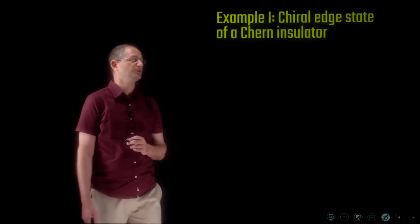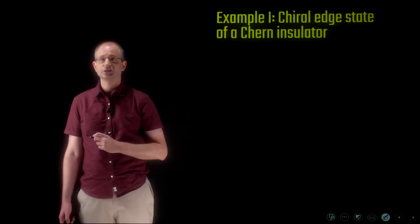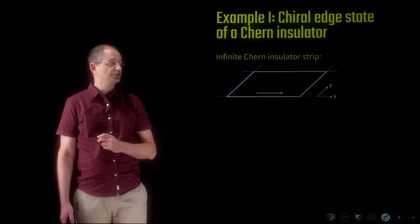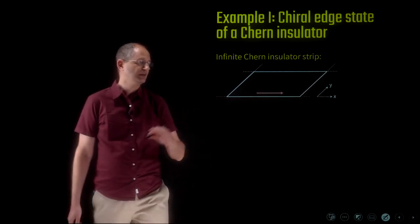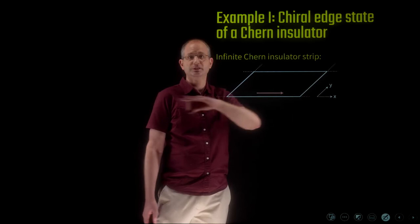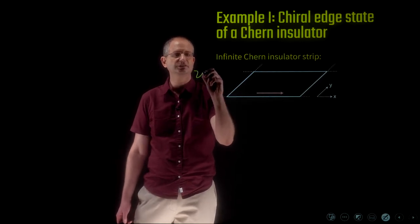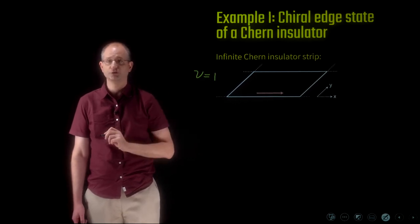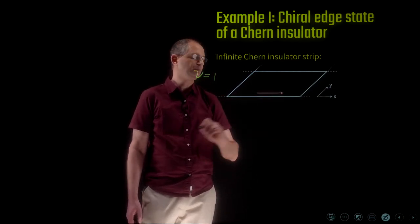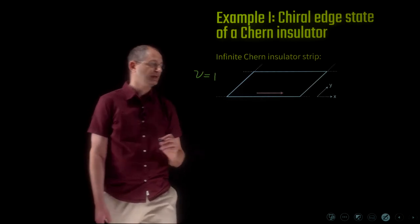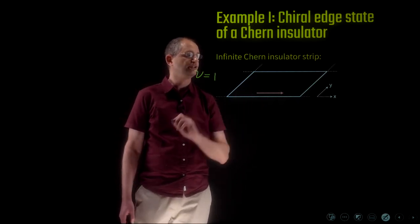Let's go into some examples. The first example is chiral edge states that appear at the boundary of a two-dimensional Chern insulator. Suppose our Chern insulator is living on a half plane, semi-infinite, with a boundary at y equals zero, infinite in the x direction. Suppose this Chern insulator has invariant ν equals one — a Chern number of one. That implies at the boundary we should have one chiral edge state moving from x equals minus infinity to plus infinity, moving only in one direction — to the right if ν equals plus one.